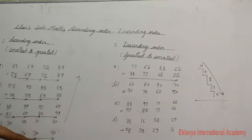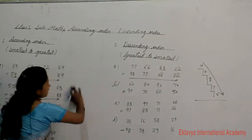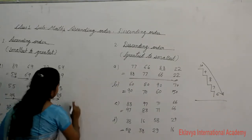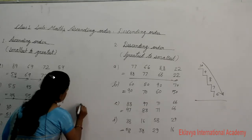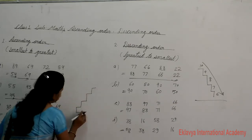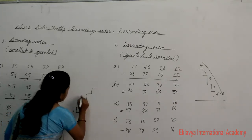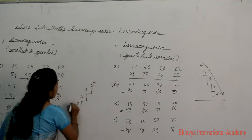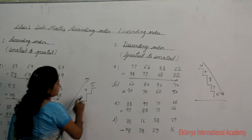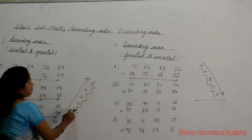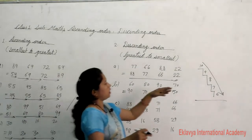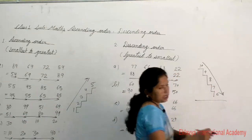And ascending order — look there: 1, 2, 3, 4, 5. Smallest to greatest number, that is ascending order. Ascending order goes from small to greatest, descending goes from greatest to small.